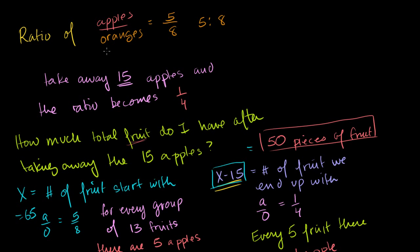So I just did a video on this where I said that the ratio of apples to oranges starts off at 5 to 8. And we take away 15 apples and the ratio becomes 1 to 4. And then the question that we have to answer is how much total fruit do we have after taking away the 15 apples?